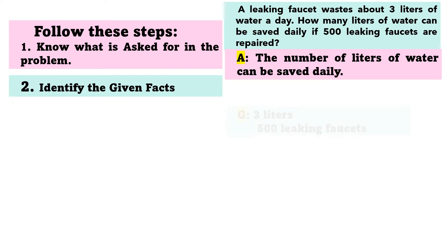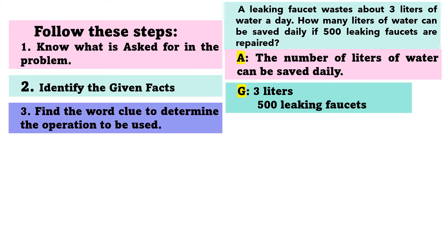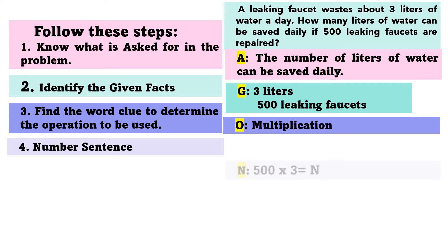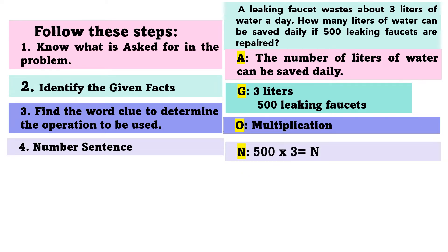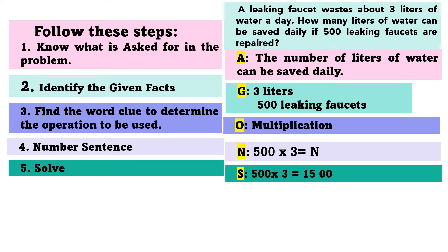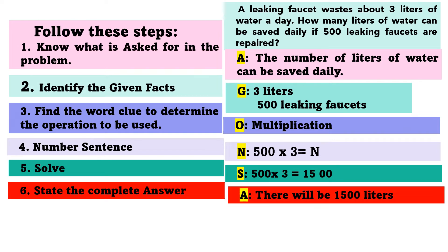Identify the given: 3 liters and 500 leaking faucets. Find the word clue to determine the operation — we have multiplication. The number sentence is: 500 times 3 equals N. Solving: 500 times 3 — 5 times 3 equals 15, then add two zeros. State the complete answer: there will be 1,500 liters of water saved.